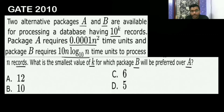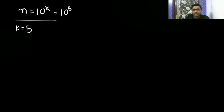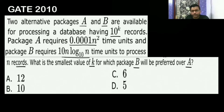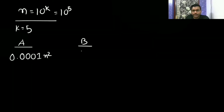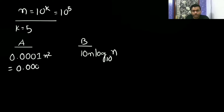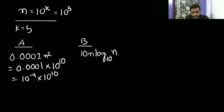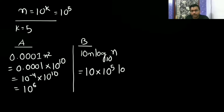First we will check the least option. When k is 5, N is 10 to the power 5. Package A takes 0.001 N squared, and since N squared is 10 to the power 10, that gives 0.001 into 10 to the power 10, which is 10 to the power 6. Package B takes 10 N log N, which gives 10 into 10 to the power 5 into 5, so B is taking 5 into 10 to the power 6 — more time.